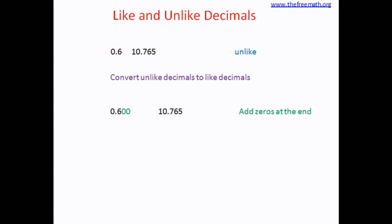What I understand from this is that if I add extra zeros at the end of a decimal number, I can convert unlike decimals to like decimals. We know that in the case of a decimal number, if we add extra zeros at the end of the decimal, it does not change its value.